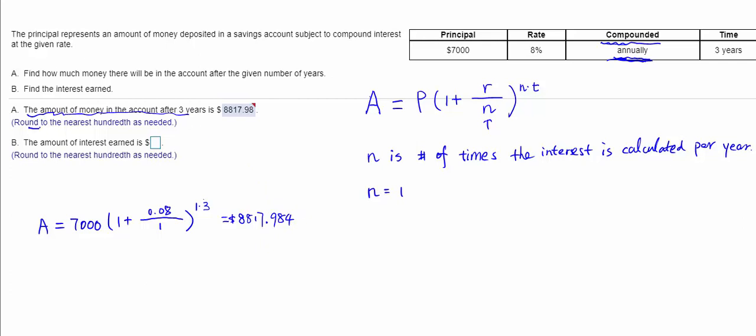They want you to round to the nearest hundredths, the hundredths place being the cents. So we round that to $8,817.98. That's the first part.